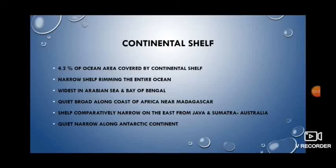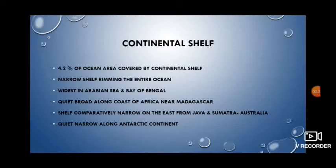Around 4.2% of the ocean area of the Indian Ocean is covered by continental shelves. Narrow continental shelves rim the entire ocean. The continental shelves are widest in the Arabian Sea and Bay of Bengal, where they are 640 kilometers broad in many places. They are also quite broad along the coast of Africa and Madagascar. The Madagascar island is on the continental shelf itself.